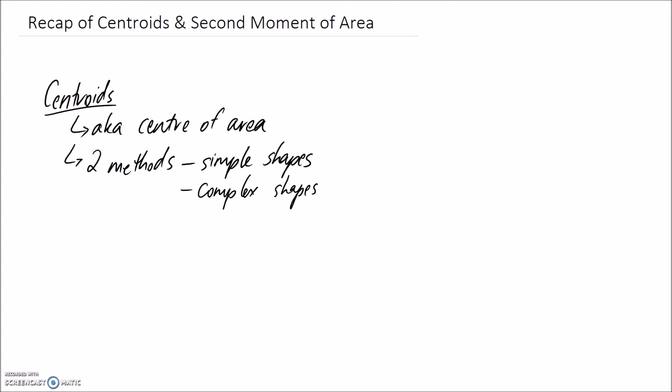So if you have some random shape, what you're looking for is the centre of where that area sits. So I guess it would be somewhere around here. And the symbol that we use to denote the centre of area or the centroid is x bar and y bar for the two coordinates.